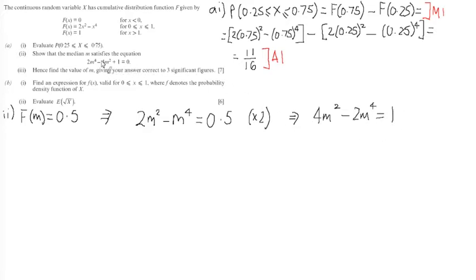And so I have now 4M squared minus 2M to the power of 4 equal to 1. I just want to rearrange the equation so that I match this, so I'm going to subtract 4M squared from both sides and I'm going to add 2M to the power of 4 to both sides of this equation, so I get 2M to the power of 4 minus 4M squared plus 1 equal to 0 as required.